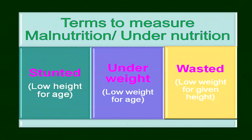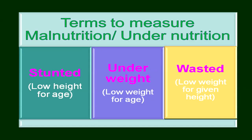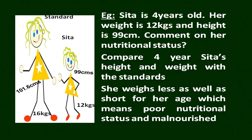There are few terms to measure malnutrition or undernutrition. At the national stage, we use three terms: stunted, underweight, and wasted. Stunted means low height for the age. Underweight means low weight for the age. Wasted means low weight for the given height. For example, Sita is four years old and her weight is 12 kg — compare this with the reference, and you can easily learn whether the child is malnourished, healthy, or overnourished.